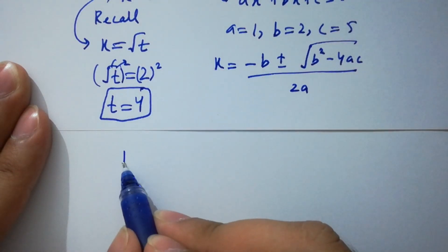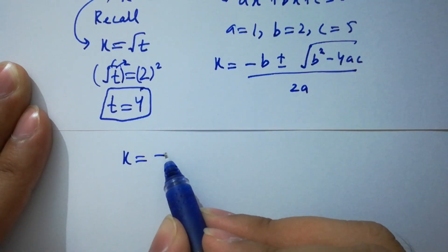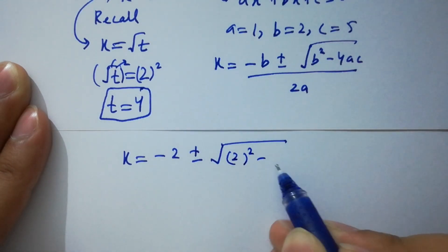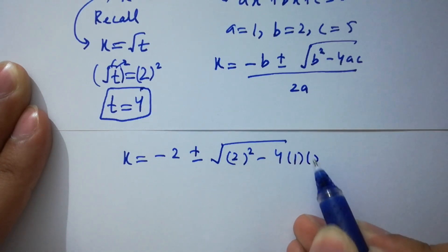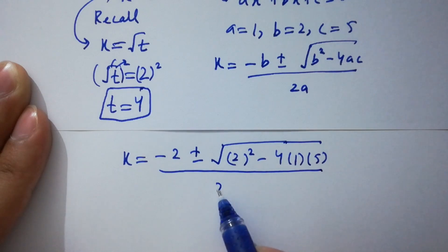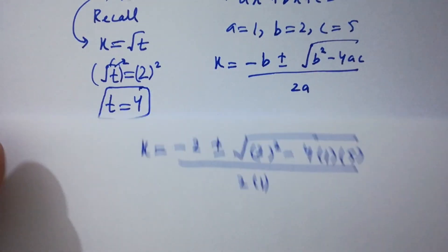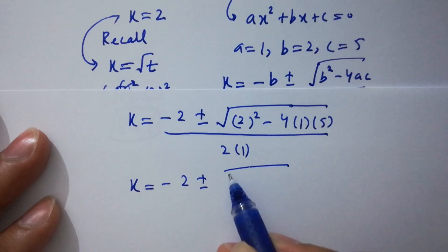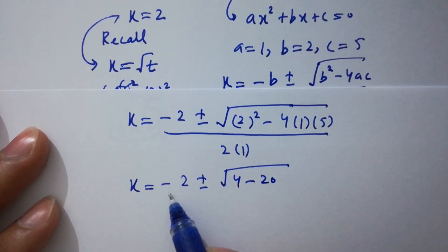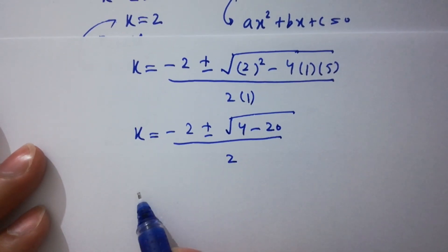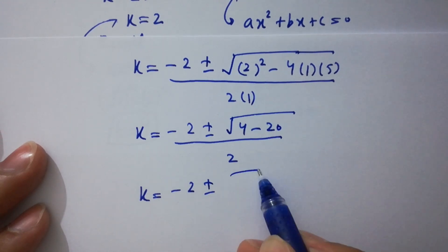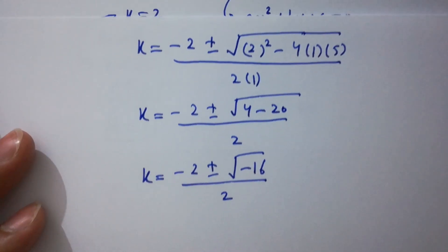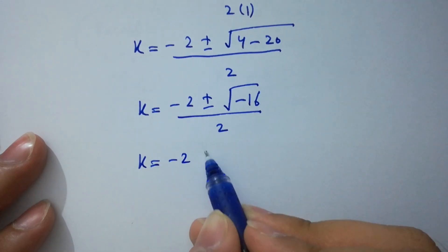k equals negative b plus or minus square root of b squared minus 4ac, all over 2a. Putting the values: k equals negative 2 plus or minus square root of 4 minus 4 times 1 times 5, over 2. That gives negative 2 plus or minus square root of 4 minus 20, over 2, which is negative 2 plus or minus square root of negative 16, over 2.